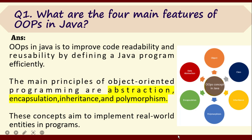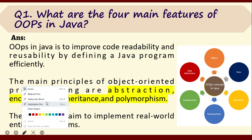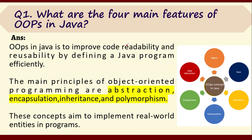Now let's discuss the next top 10 questions of the Java interview series. Question number one: what are the four main features of OOPs in Java? This is going to be one of the common questions asked. As we know, Java is an object-oriented programming language, and its purpose is to improve code reusability and readability. There are four basic principles: abstraction, encapsulation, inheritance, and polymorphism.